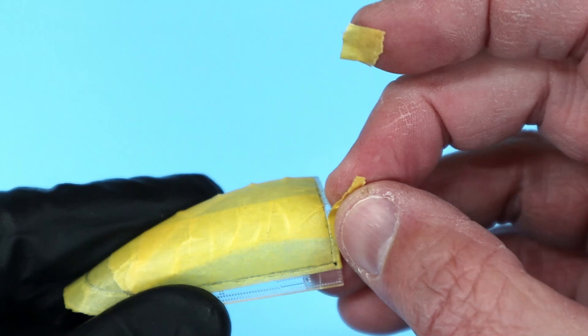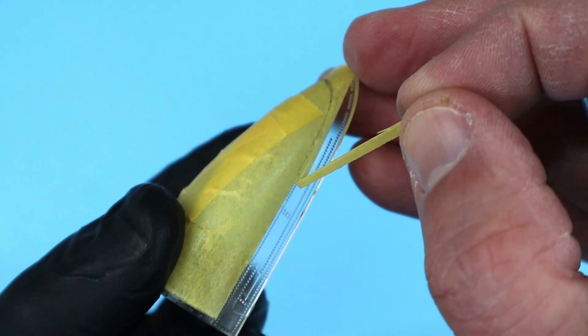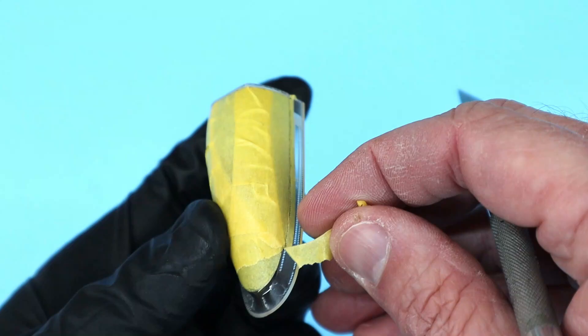With the canopy to frame seam cut, I just peel away the tape from the framed portions. First the front of the canopy and then the portions of the frame along the sides and back.